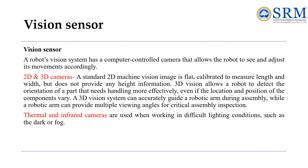A robot's vision system uses a computer-controlled camera to see and adjust its actions. 2D cameras show a flat image while 3D cameras provide depth information, helping robots handle objects with varying positions more effectively. Thermal and infrared cameras help robots work in challenging lighting conditions like darkness or fog where regular cameras might struggle.